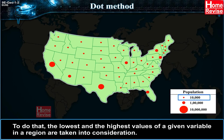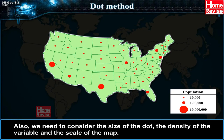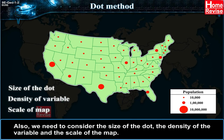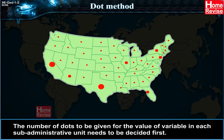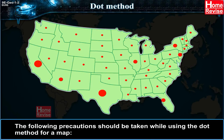To determine the dot value, the lowest and highest values of a given variable in a region are taken into consideration. The number of dots is determined accordingly. We also need to consider the size of the dot, the density of the variable, and the scale of the map. The number of dots to be given for the value of the variable in each sub-administrative unit needs to be decided first.